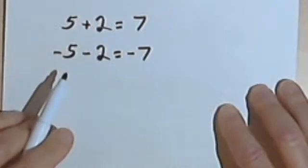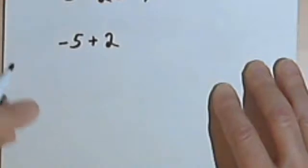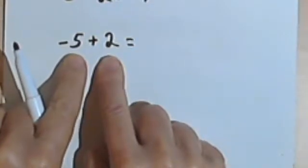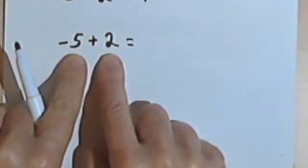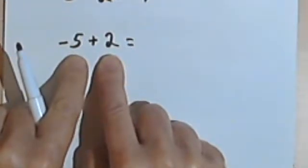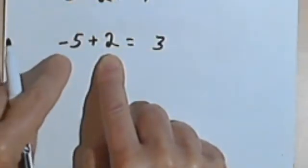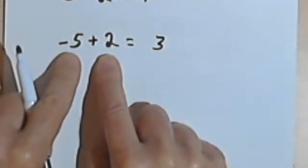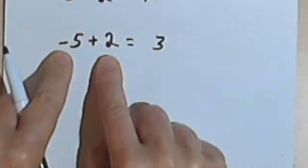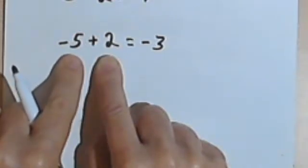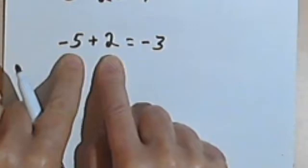Now let's look at what happens when one number is positive and one is negative. Say I have negative 5 plus 2. Look at the numbers — forget the signs for a second. Take the smaller number, which is 2, and subtract it from the bigger number: 5 minus 2 is 3. Then put the sign of the bigger number in front. The bigger number is 5 and it's negative, so the answer is negative 3. It makes sense: combining a lot of negative with a little positive leaves you negative.